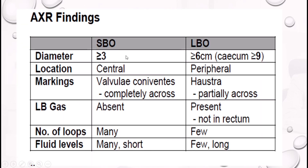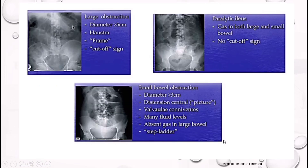Summarizing abdominal X-ray differentiation: small bowel shows diameter more than 3 cm, central location, valvulae conniventes (completely across), absent large bowel gas, many short fluid levels. Large bowel shows diameter more than 6 cm (cecum more than 9 cm), peripheral location, haustra (partially across), large bowel gas present but absent in rectum, and few long fluid levels.